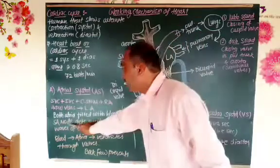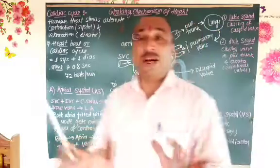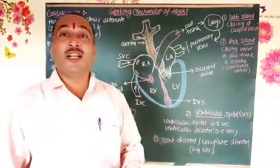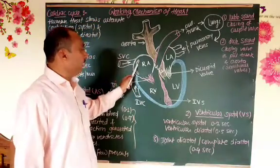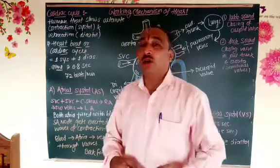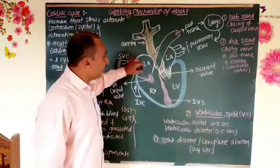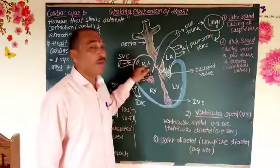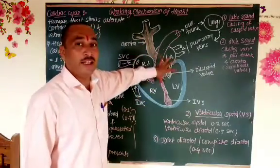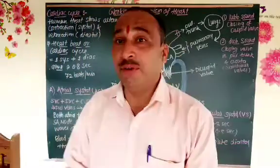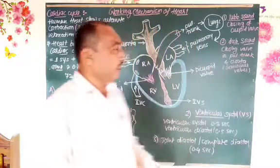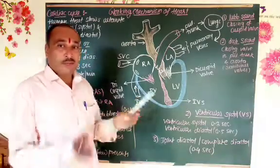When both atria are filled with blood, the SA node gets excited and generates waves of contraction. These waves spread over both atria causing them to contract. Due to contraction, respective blood from both atria is released into both ventricles through the atrioventricular valves. The conducting system carries the wave of contraction from the SA node forward.